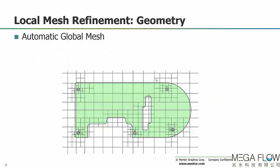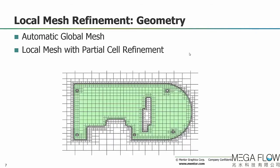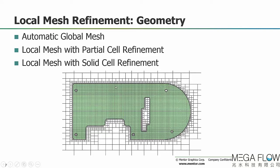For mesh refinement on geometry, using a printed circuit board as an example, after the automatic global mesh generation process, Flowtherm XT has captured all the features including holes, cut-out areas, and notched areas. To resolve geometry in more detail, we can control the mesh on the boundary between solid and fluid — these are called partial cells — focusing refined mesh just in those boundaries. We can also control the mesh within the solid itself.